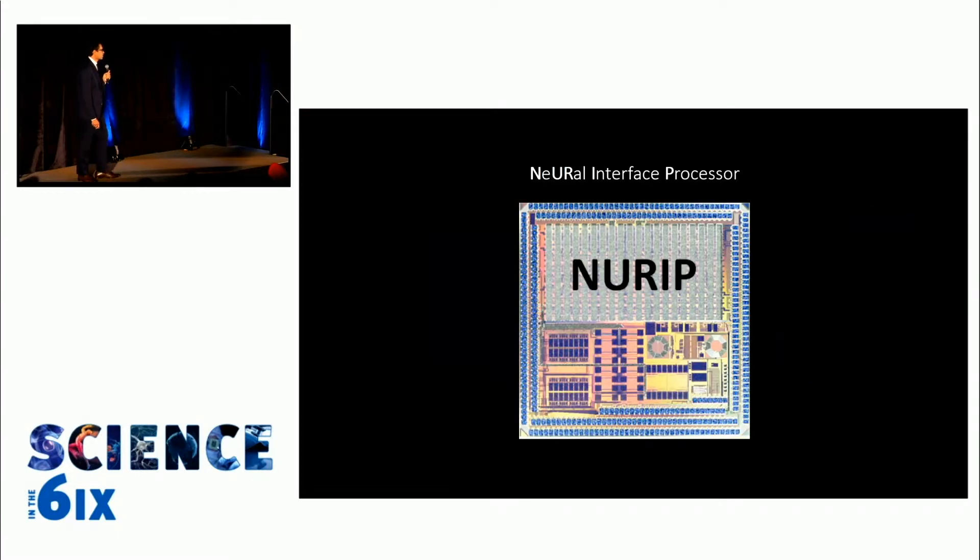One way that we're doing this is through a device we've created called Neurope, the Neural Interface Processor. It's a computer chip but not any kind of computer chip. Neurope is able to determine when a seizure is about to happen and then gently stimulate the brain to stop the seizure from taking place.